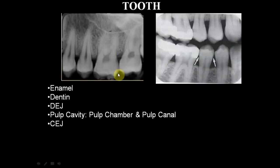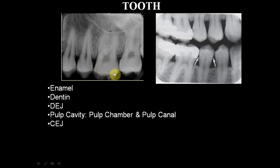Regarding the tooth, we have enamel, dentin, and the pulp. In this topic we'll be speaking about two terminologies: radiolucency and radio-opacity. Radiolucency refers to the darker areas you see in a radiograph, while radio-opacity refers to the whiter, opaque areas. Enamel, which is highly mineralized at around 90%, shows the greatest radio-opacity.